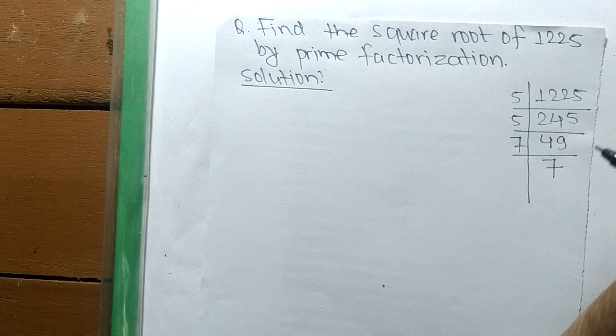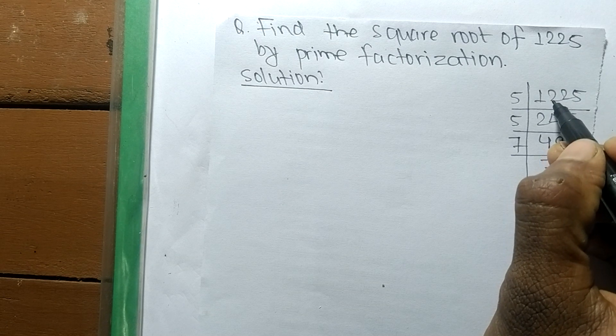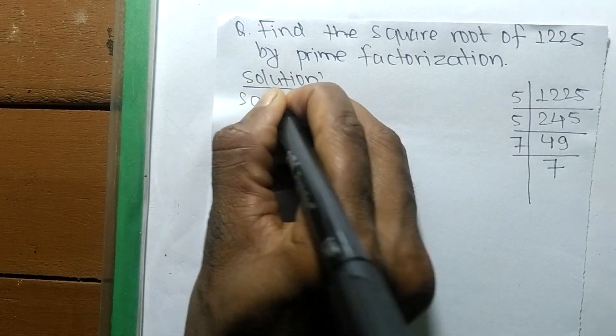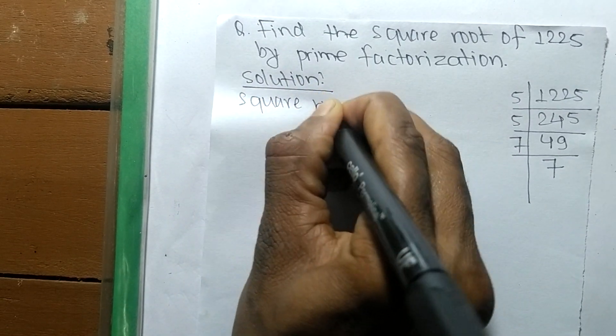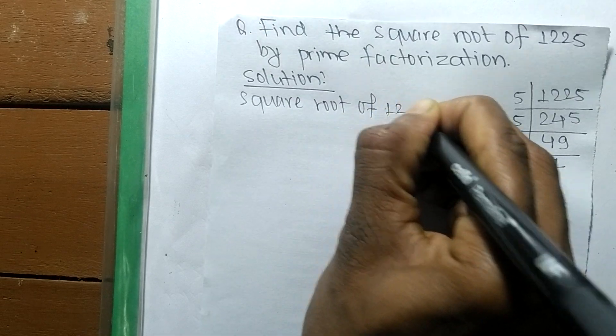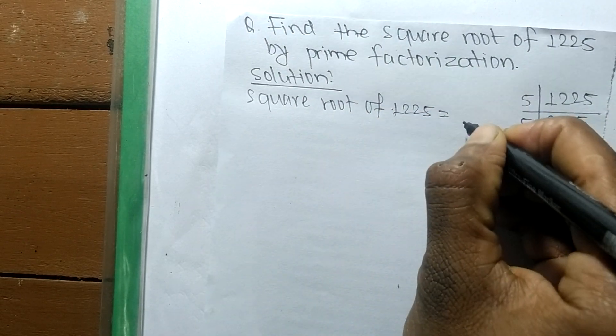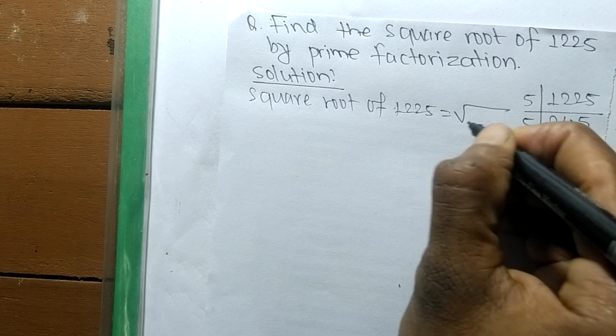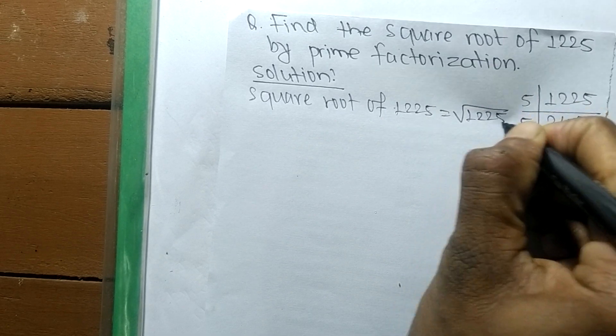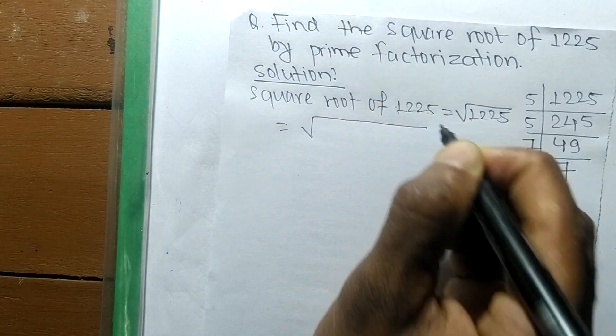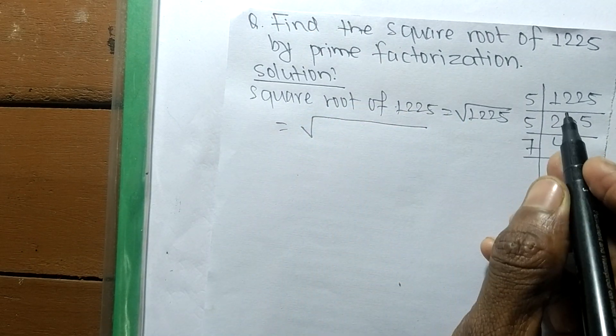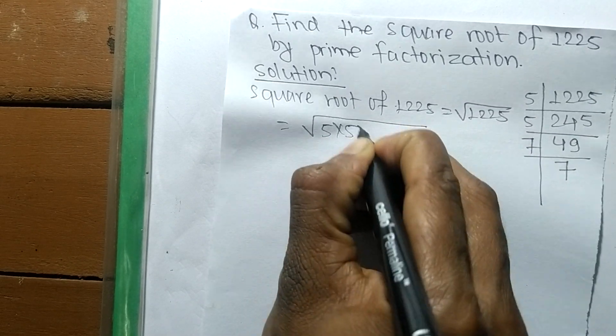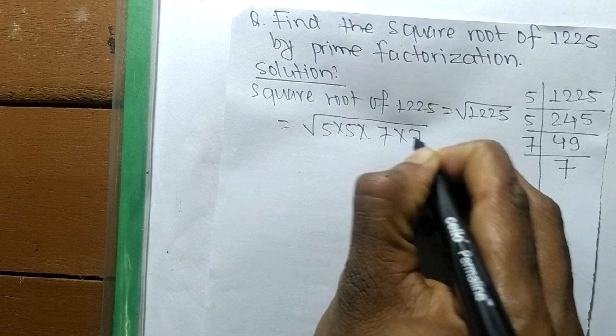So now we have taken out the prime factors of 1225. So now we find its square root. Square root of 1225 is equal to—this sign is the sign of a square root and we are finding here the square root of 1225. So now we write the prime factors of 1225, so it is 5 times 5 like 7 times 7.